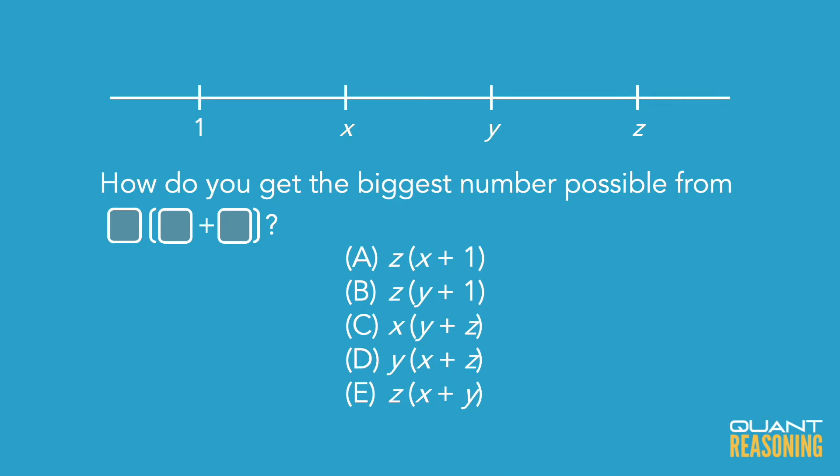What if you were allowed to replace one of those numbers with the number one? Remember, all three numbers you're given are greater than one. Would you ever want to replace one of them with one? No, of course not — that wouldn't maximize your value. So we can eliminate answer choices A and B just based on that reasoning. I would never want to replace one of my numbers with the number one in this game.